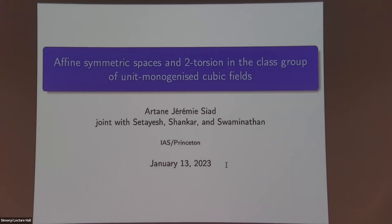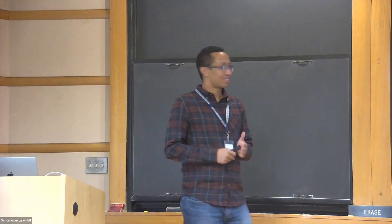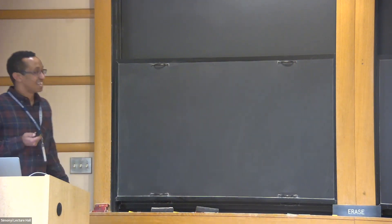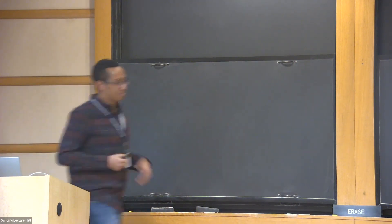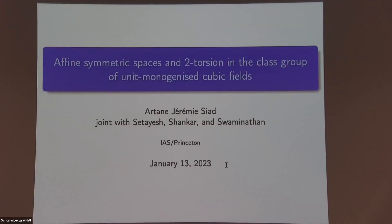In our first talk, we're going to hear from Artein Saeed, talking about affine symmetric spaces and two-torsion in the class group. Thanks Wei, and thanks to the organizers for the invitation — it's an honor to speak here. I'll talk about my work joint with Iman Satayesh, Arul Shankar, and Ashwin Sonanathan on computing class group averages in very thin families using some new tools.